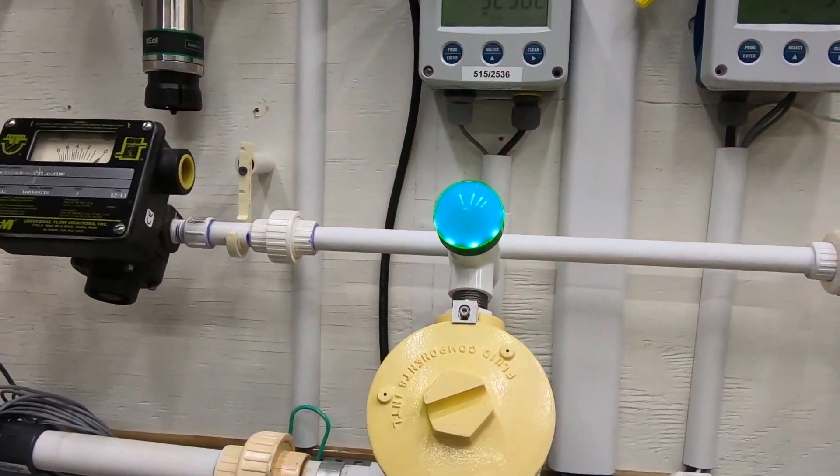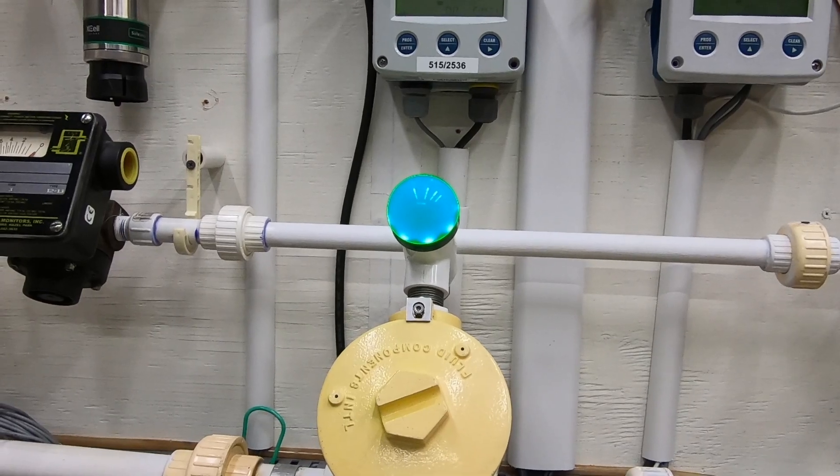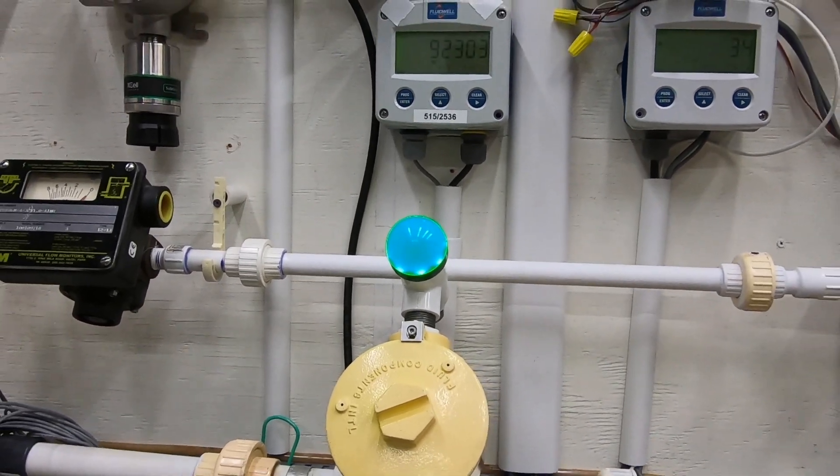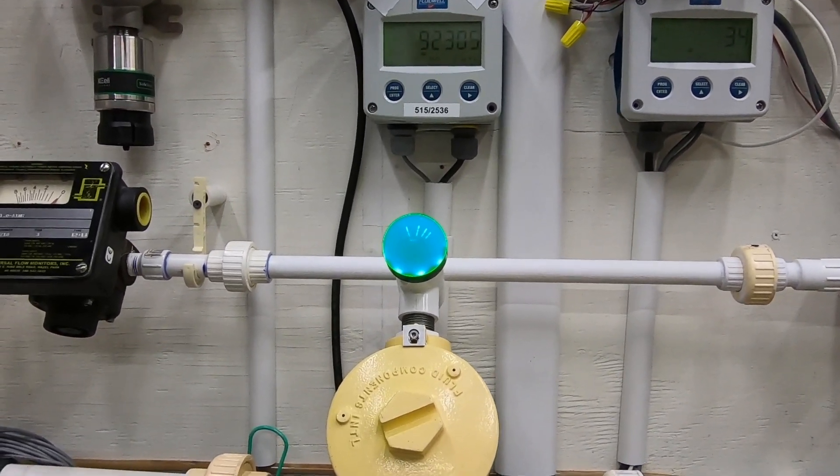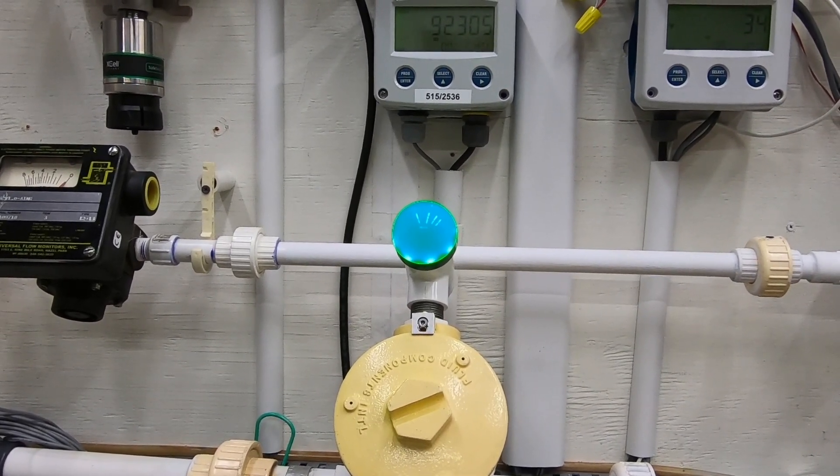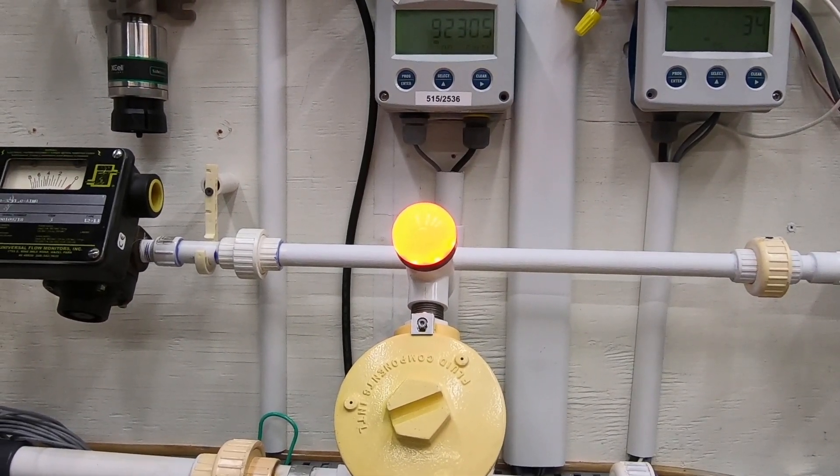We're starting up the flow and you should see our light change from red to green showing that we now have flow. If I close our valve on that line, it shows us no flow now.